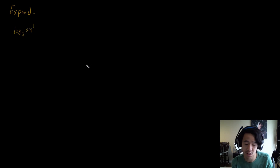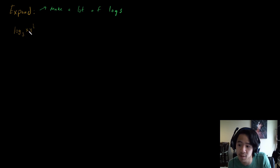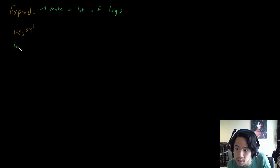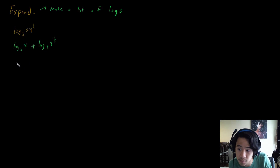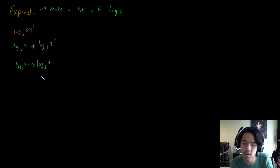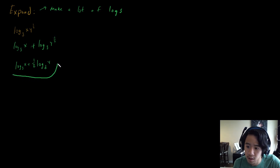Now let's look at expansion problems, where we take a complex log and break it into simpler ones. We split log base 3 of x times the square root of y: since they're multiplied, we use addition — log base 3 of x plus log base 3 of y to the one half. Then we apply the power property to move the exponent outside: log base 3 of x plus one half times log base 3 of y. That's our answer.